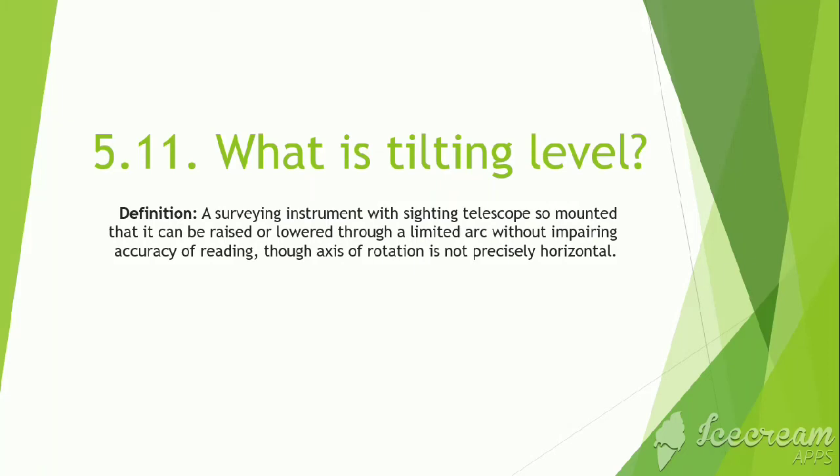Tilting Level. A surveying instrument with sighting telescope so mounted that it can be raised or lowered through a limited arc without impairing accuracy of reading, though the axis of rotation is not precisely horizontal.